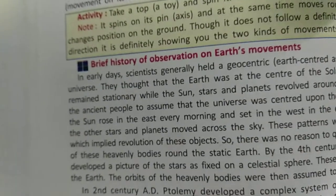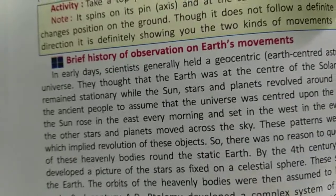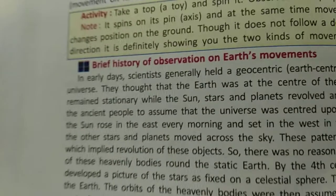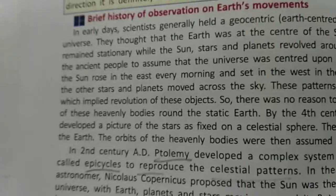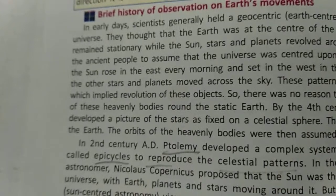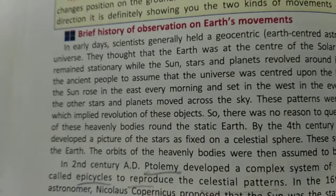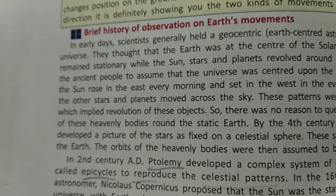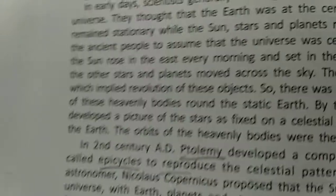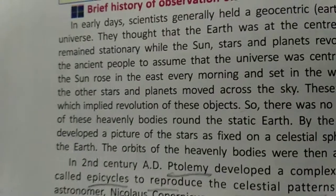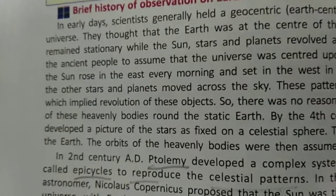Now a brief overview of the historical understanding of Earth's movement. In earlier days, scientists held many views to find out what was happening in the sky. They thought that the earth was at the center and was stationary, while the Sun, stars, and planets moved around it in revolution.